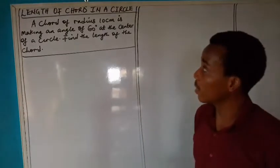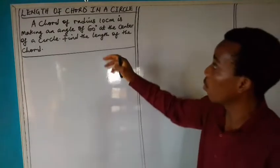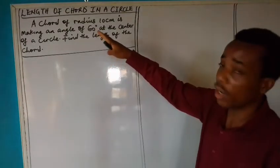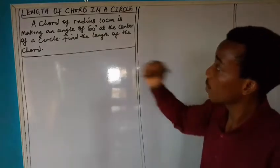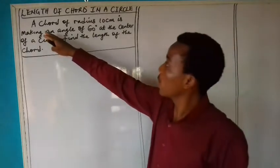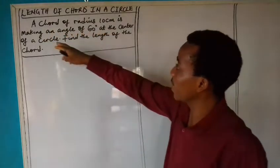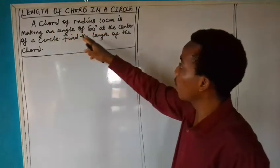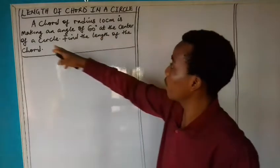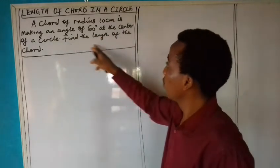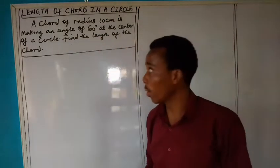In this lesson, we are going to focus on the length of a chord in a circle. This question says: a chord of radius 10 cm is making an angle of 60 degrees at the center of a circle. Find the length of the chord.